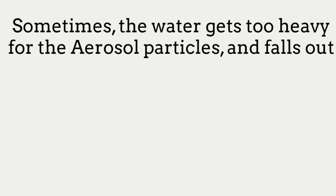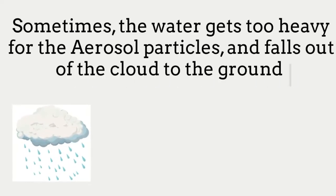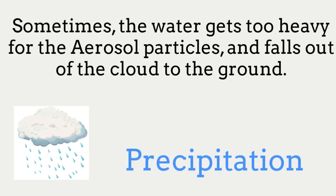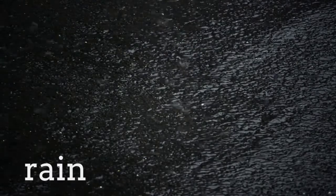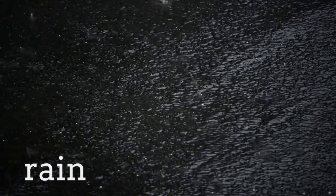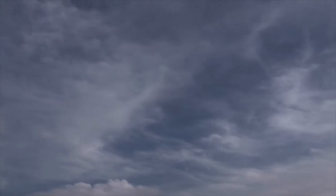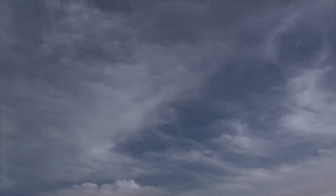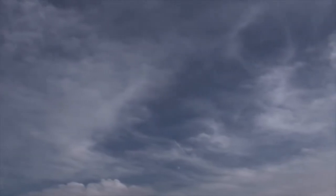Sometimes the water gets too heavy for the aerosol particles and falls out of the cloud to the ground. That's called precipitation — a big word. Precipitation refers to anytime water falls out of clouds to the ground. Rain is a great example of precipitation. When it's raining, it's like the clouds in the sky are sharing their water with us.